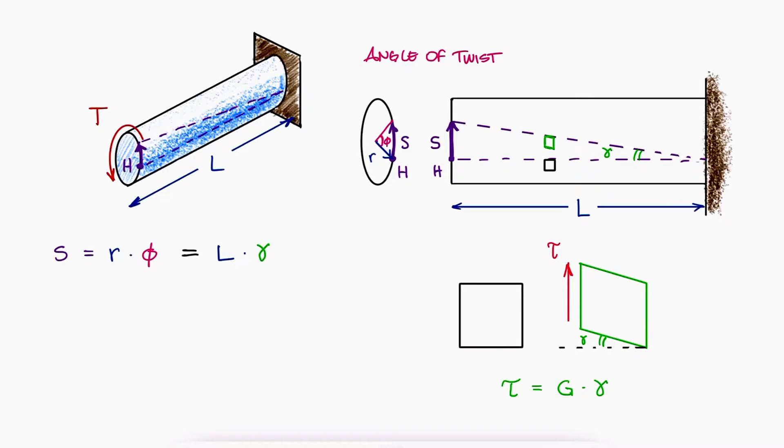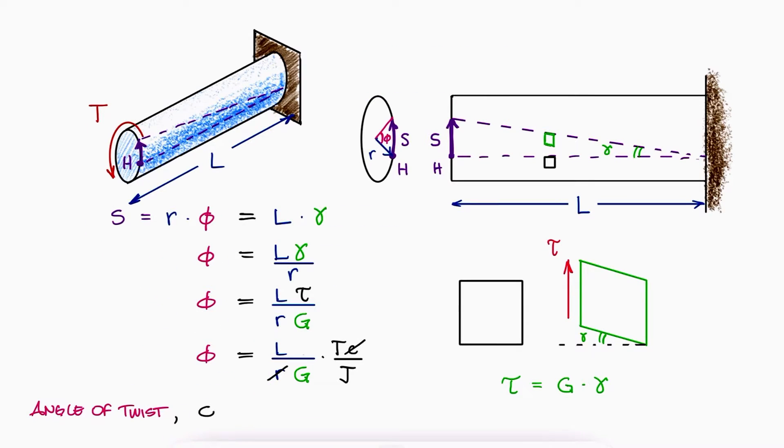And since gamma is equal to the shearing stress over G, and that stress is the maximum stress expression for torsion, since H is at the surface, C and R, which are the same value for the radius of the rod, cancel out, and the angle of twist is therefore equal to TL over JG.